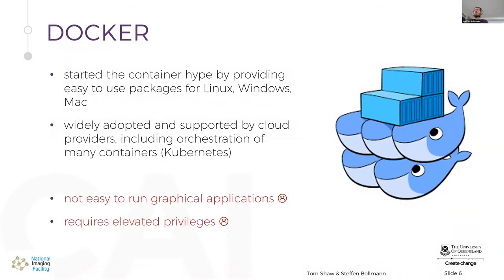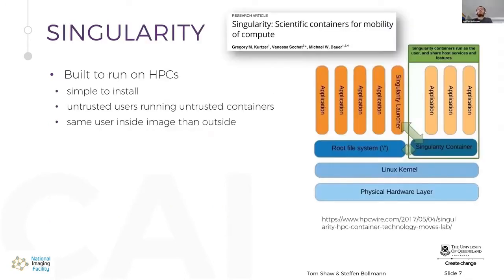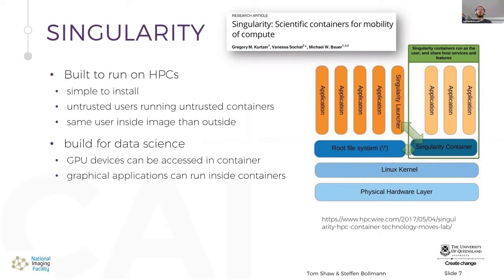What's the problem with Docker for us? We run a lot of graphical applications — FSL view, MR view, and similar tools — and that's not easy with Docker. Docker also requires elevated root privileges. That's why a different tool was created for the scientific community: Singularity. It's very similar to Docker but simpler to install, runs on high performance computing systems, and allows untrusted users to run untrusted containers — meaning you're the same user inside the image as outside. Because of this, you can run it in a shared environment, which you can't do with Docker. Singularity is built for data science: GPU support is much easier, and graphical applications work without any wizardry.